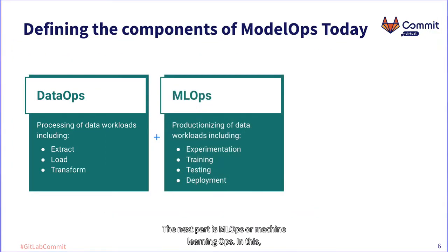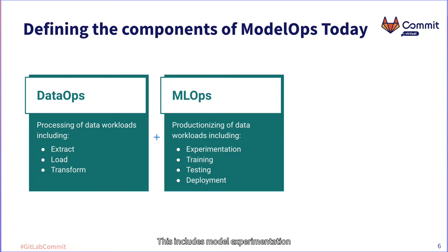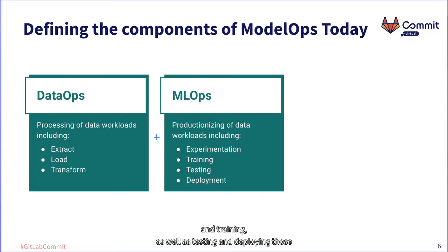The next part is MLOps, or Machine Learning Ops. In this, you're taking the data you collected and preparing models for production. This includes model experimentation and training, as well as testing and deploying those models, including partial deploys and partial rollbacks.